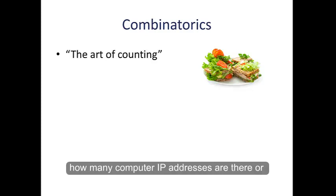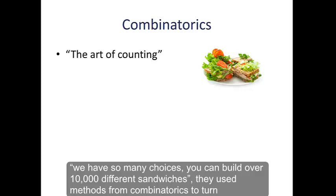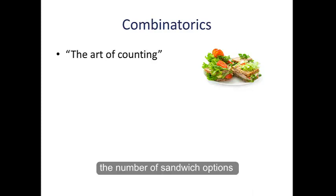Like how many computer IP addresses are there or how many possible social security numbers are there. If you've ever seen a restaurant advertise something like, we have so many options you can build over 10,000 different sandwiches, they use methods from combinatorics to turn the number of sandwich options into a total number of sandwiches.